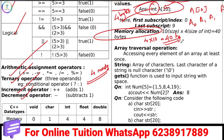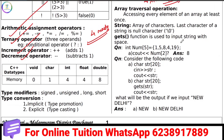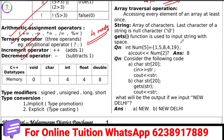A string is an array of characters. The last value in a string is the null character, which represents the end of the string.